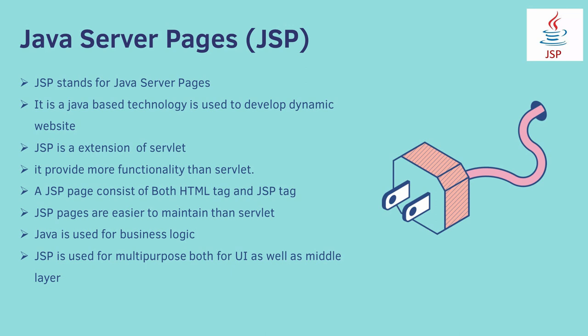Java is used for business logic — that is what the project you want to develop, what code it should contain. Java can connect to databases. GSP is used for multipurpose — both for UI as well as middle layer. Completely end to end. If you just have GSP, you can develop a complete end-to-end project: front end, middle layer using JDBC, connect to databases and get everything. But right now in the industry, GSP is used for UI — user interface.